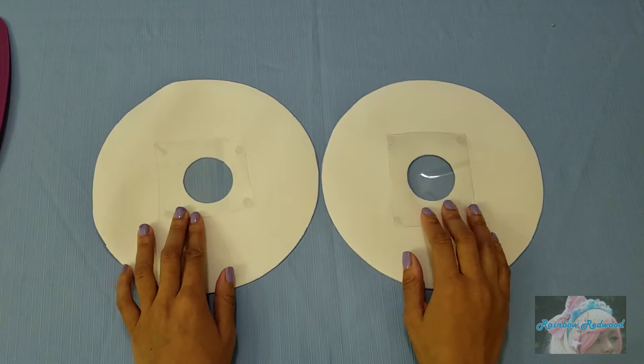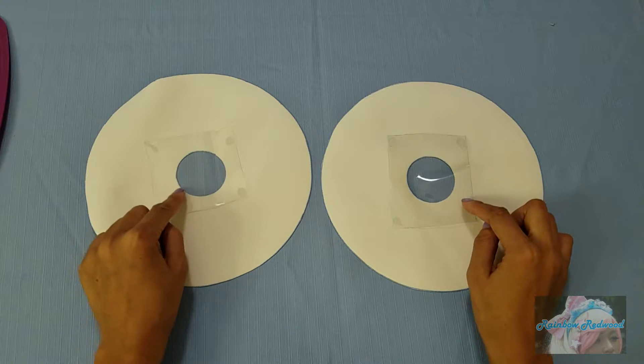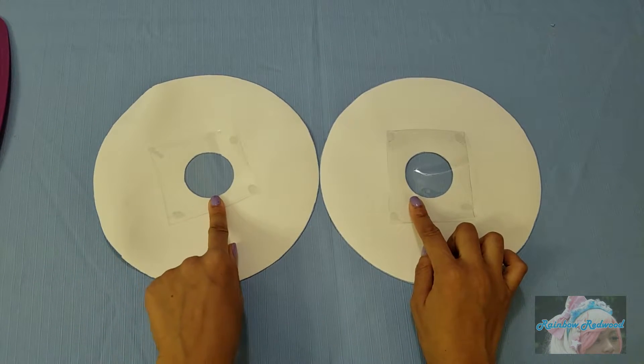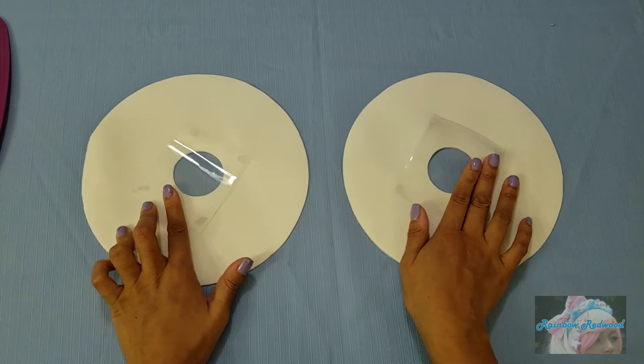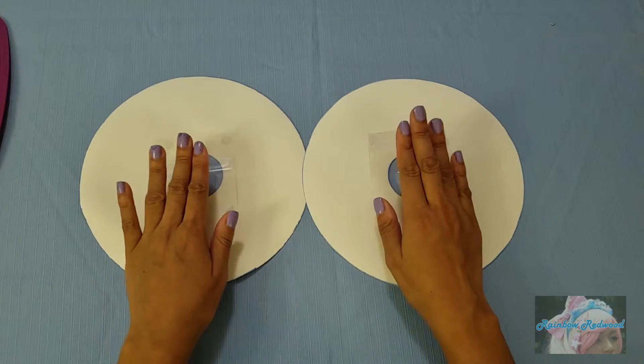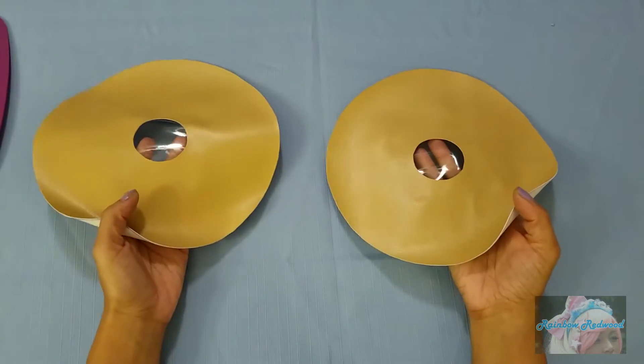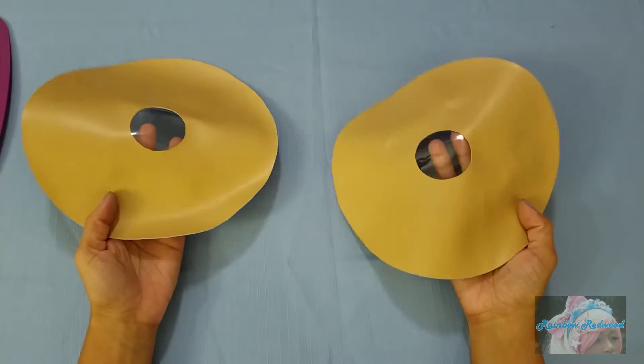After your hot glue is cooled, you're going to sew around these circles, probably with about a one eighth of an inch seam. Also, it might be easier for you to sew it face down or face up. It just depends on your sewing machine. For me, it's easier to sew these face down.